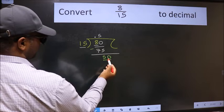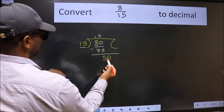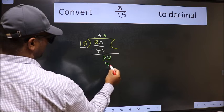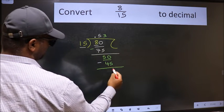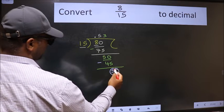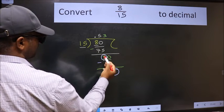So, 50. A number close to 50 in 15 table is 15, 3 is 45. Now we should subtract. We got 5 again. Earlier also, we got 5.